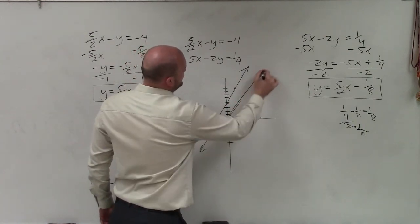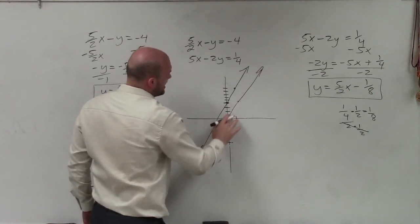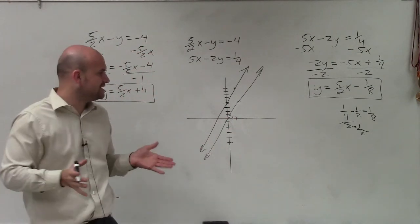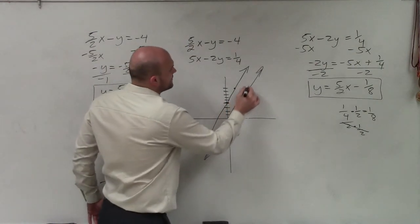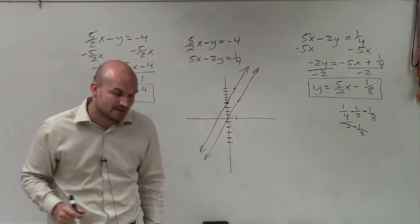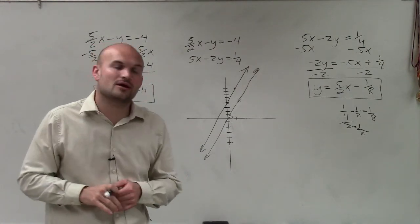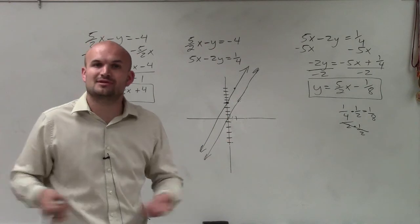So hopefully what you guys can see is that even though my lines are kind of not straight and not the best, you can see that these lines are going to continue indefinitely without ever touching each other. Therefore, this again is an inconsistent solution. And it is an inconsistent solution or inconsistent system with no solution. Thanks.